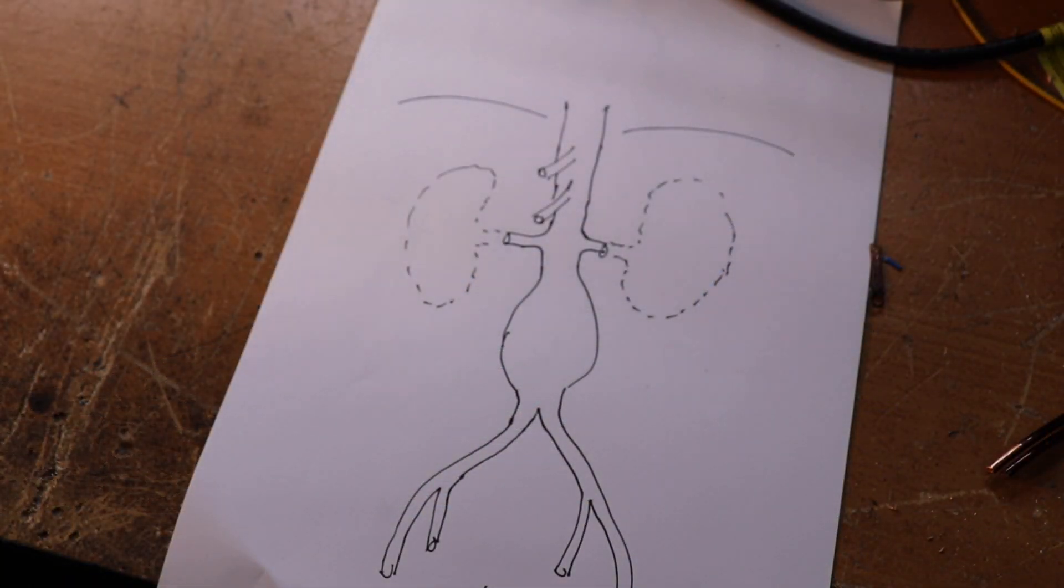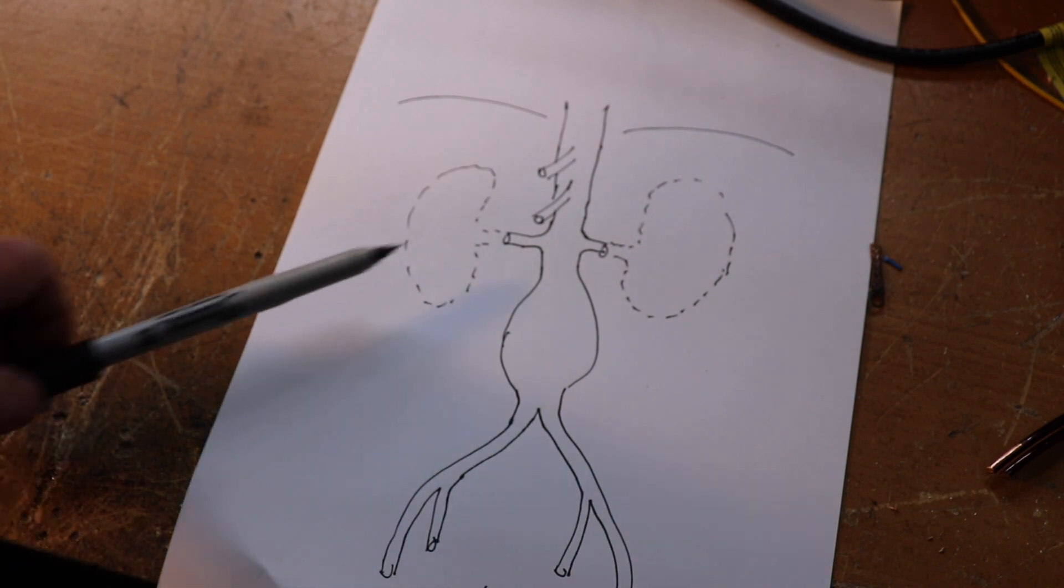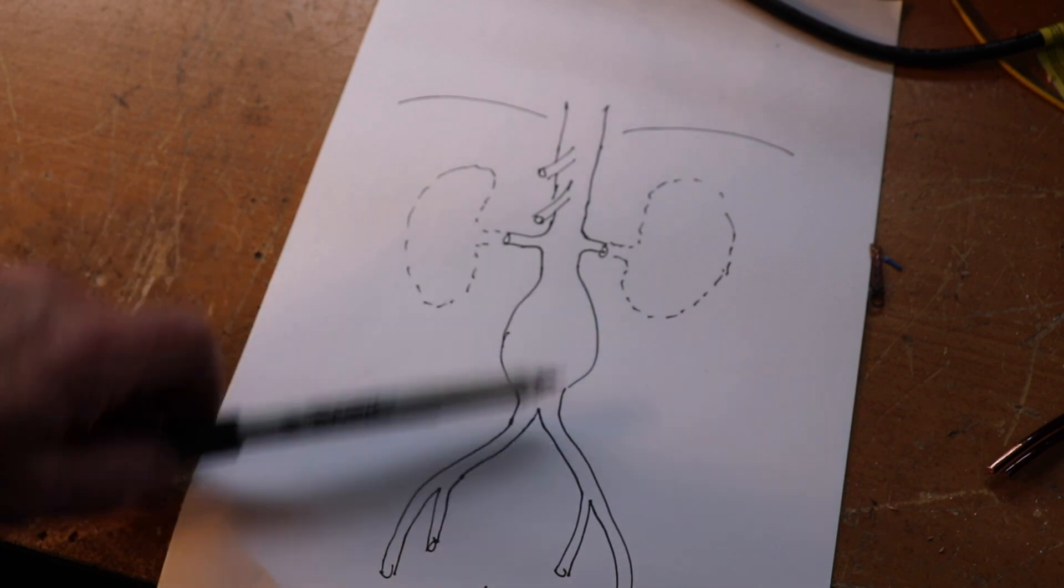Before we look at these grafts in more detail, I thought I would just go over a bit of the anatomy and the indications for when we use these things. The grafts I'm going to show you this evening are basically used for repairing aortic aneurysms.